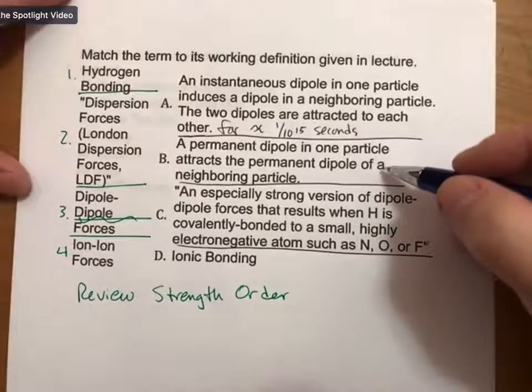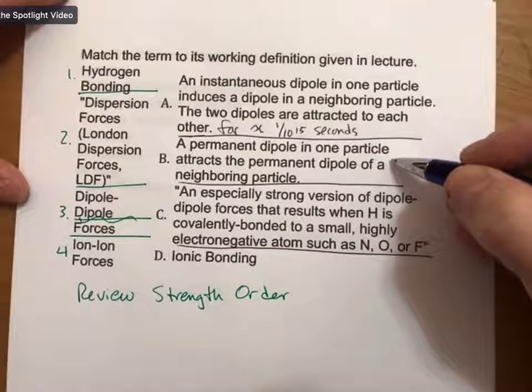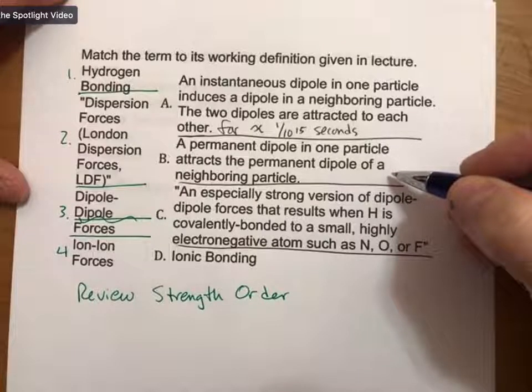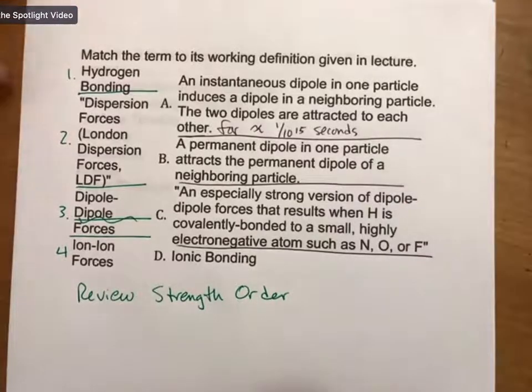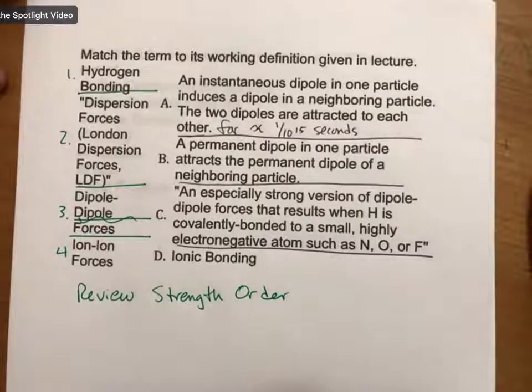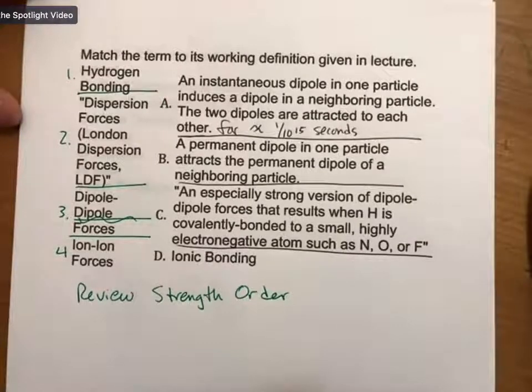How about B? A permanent dipole in one particle attracts the permanent dipole of a neighboring particle. Somebody else, please. Which one of these? One, two, three, or four? Or by name. I'll drink some tea while I'm waiting. Professor, is it dipole-dipole forces? Thank you, Daryl. It is.